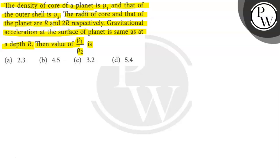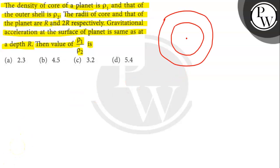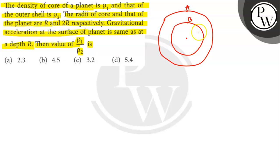Let's draw the diagram. Consider the core and the outer shell of the planet as shown in the figure. Consider point A on the surface of the planet and point B at a depth of r.